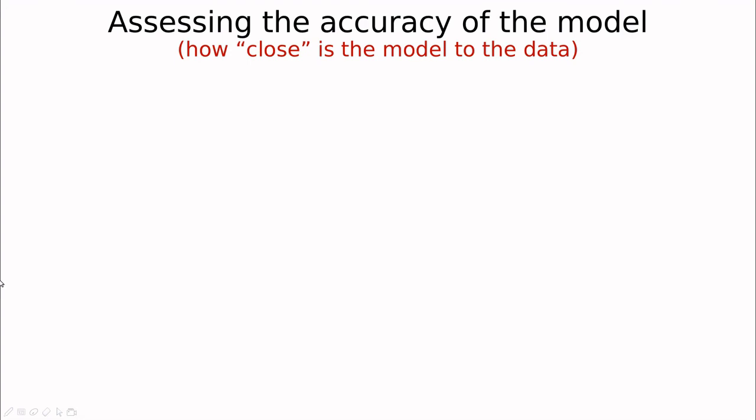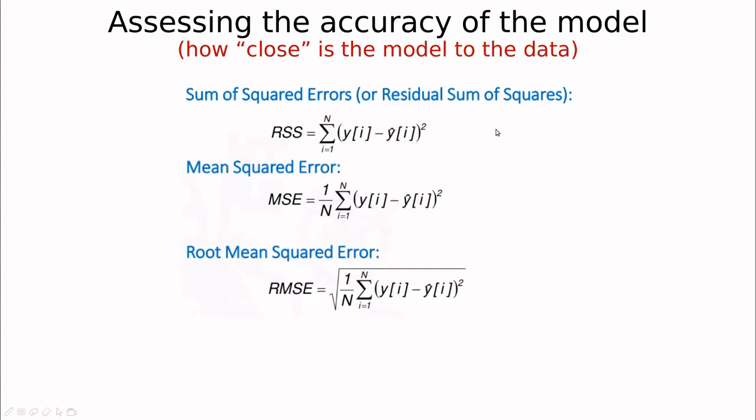So one interesting thing that we have to do is not just estimating the parameters, but try to see how close is the model, how good is the model. So there are different metrics. The most important one, and all of the metrics are related to this one, is called the sum of square errors, or sometimes the residual sum of squares. And as you can see by the name, this is basically summing all the differences between the real value in the dataset and the estimated value according to our model. The mean square error is this divided by n, and the root mean square error is the square root of the one before.